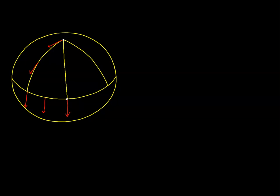This time let's choose a different path. Let's go down this line of longitude and over the equator the other way. The vector starts out being at right angles to this path, and because this is also a geodesic, it will remain at right angles. So the vector will be orthogonal all the way down to the equator, which means it winds up being tangent to the equator here. And as we transport to the left over to our reference point, it winds up being tangent to the equator right over here.